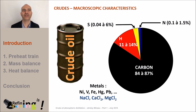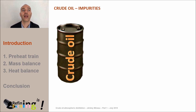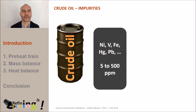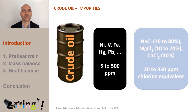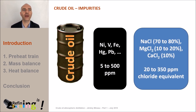They are present in the form of NaCl, CaCl2 and MgCl2. The content of metals associated with hydrocarbons typically varies between 5 and 500 ppm. As for the metals associated with the salts, we prefer speaking in chlorine equivalent. This content, which includes the salts of sodium, magnesium and calcium, varies between 20 and 350 ppm.